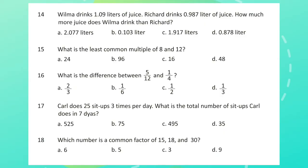Question 14: Wilma drinks 1.09 liters of juice. Richard drinks 0.987 liters of juice. How much more juice does Wilma drink than Richard?